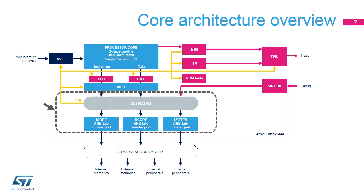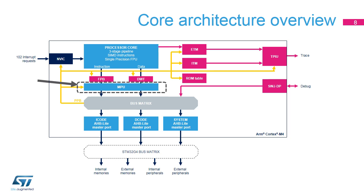One of the outputs of the Cortex M4's bus matrix is the private peripheral bus, or PPB, which is internal to the CPU. It is used to access memory-mapped registers present in the NVIC, MPU, and debug units. In the Cortex M4 core, the memory protection unit, or MPU, is used to protect address ranges according to the configured access permissions.